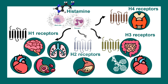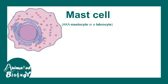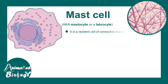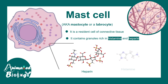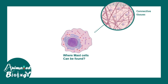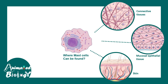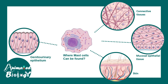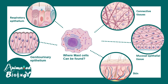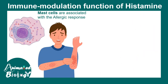Mast cells, also known as mastocytes, are resident cells in the connective tissue. They contain specific granules enriched in histamine and heparin, which are released during allergic reactions. Mast cells can be found in connective tissue, mucosal epithelial cells, skin, genitourinary epithelium, and respiratory epithelial tissues.